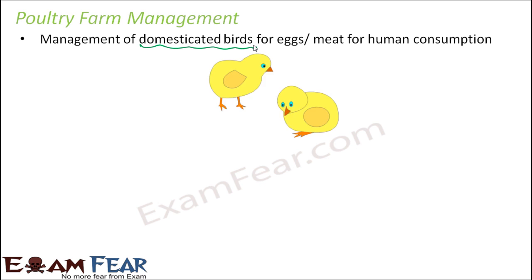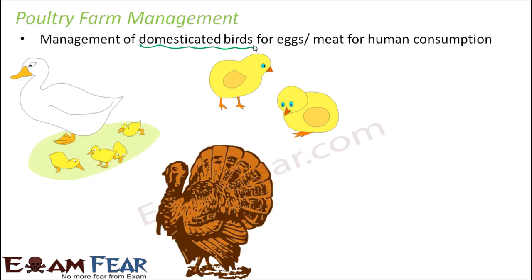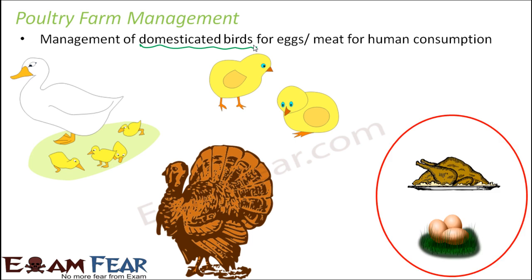What are the birds that fall under poultry farm management? Chickens, ducks, geese, turkey — all these birds fall under poultry farm management. From these we get meat or eggs, which are the food products we receive from these birds. More common of these are chickens and ducks, which are more commonly used, at least in India.